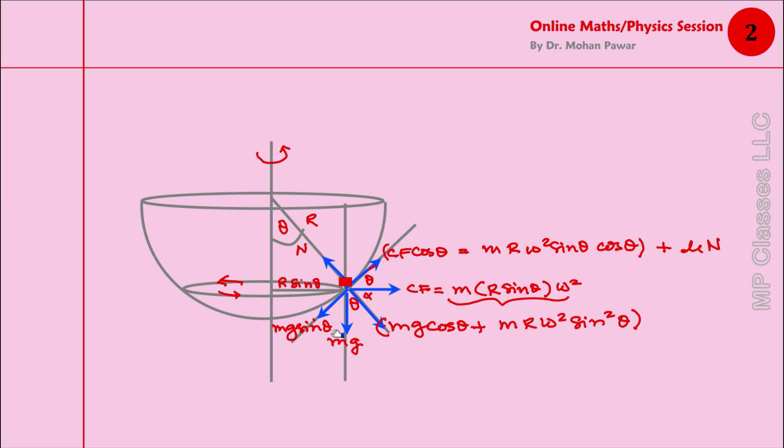This mg sin θ which is acting downward—if this balances this one, then there will be no slippage. I am saying balances, meaning equal. If it is not balanced, if this is greater, the mass is going to go upward; if mg sin θ is greater, the mass is going to go downward. So the condition to find ω² is: mg sin θ equals...